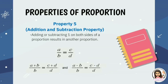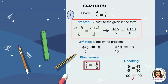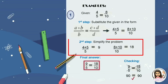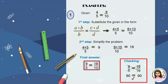Property 5: the addition and subtraction property. Adding or subtracting 1 on both sides of a proportion results in another proportion. So a over b equals c over d becomes a plus b over b equals c plus d over d, and a minus b over b equals c minus d over d. Let's try solving with 4 over 5 and 8 over 10. First step: substitute into the form a plus b over b equals c plus d over d, giving 4 plus 5 over 5 equals 8 plus 10 over 10. Second step: simplify — 4 plus 5 equals 9, and 8 plus 10 equals 18. Final answer: 9 over 5 equals 18 over 10. Checking: 9 multiplied by 10 equals 90, and 5 multiplied by 18 equals 90. Therefore, our answer is in proportion.